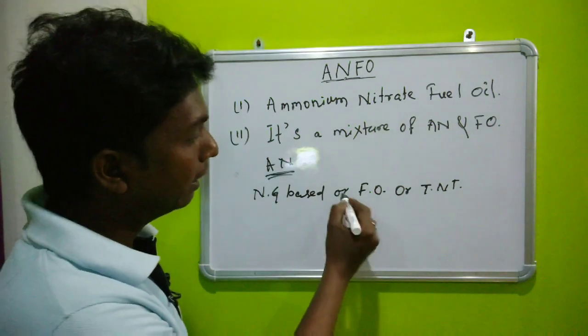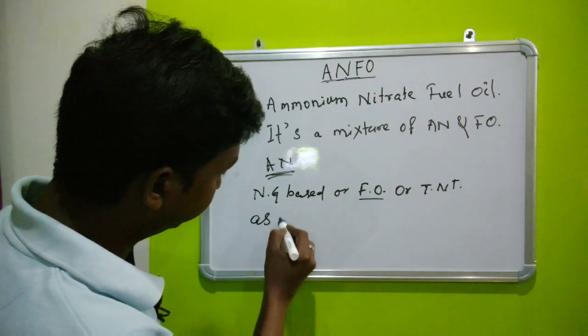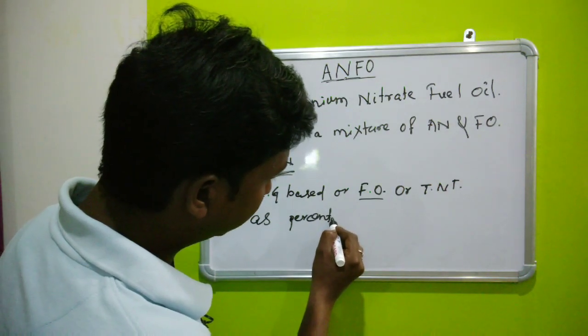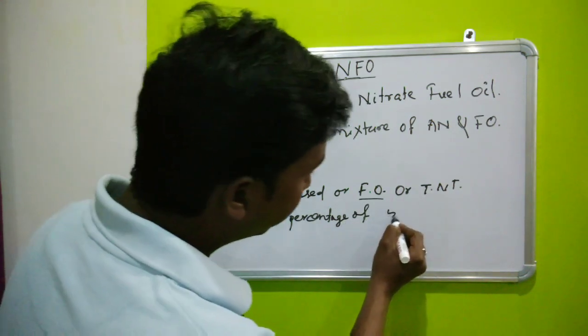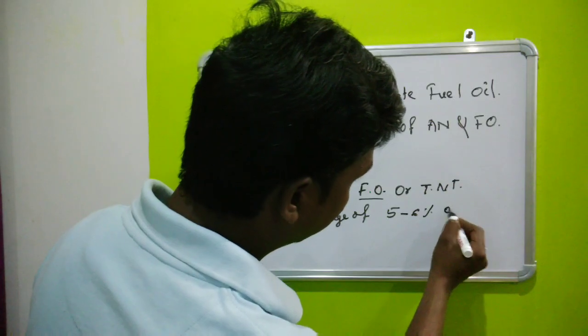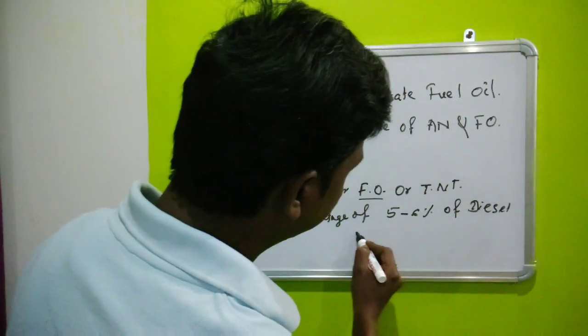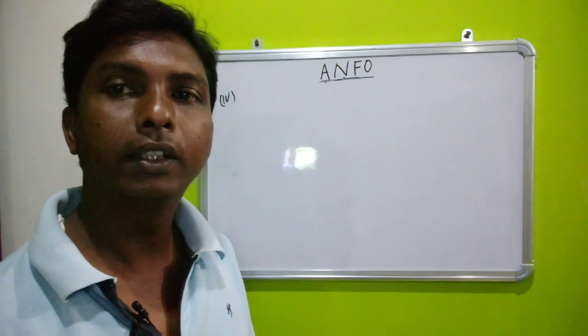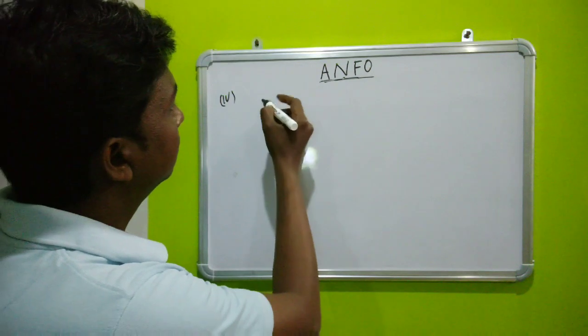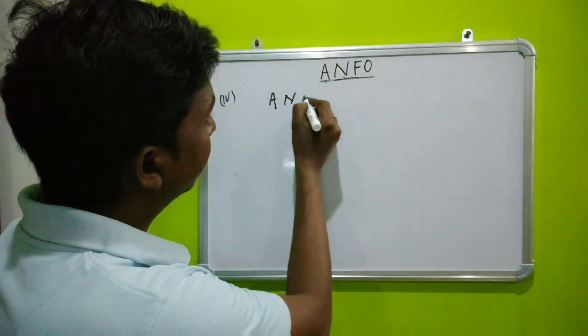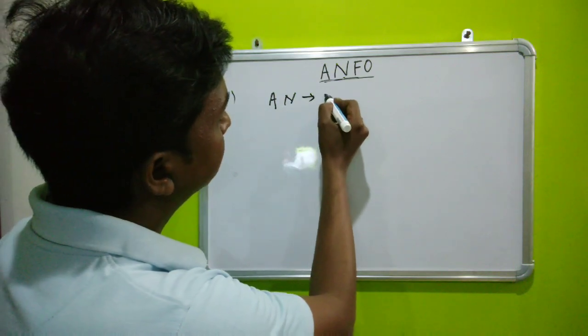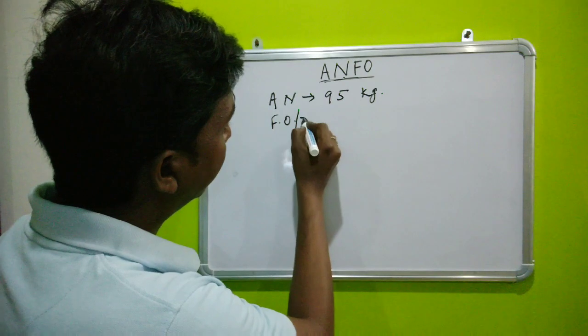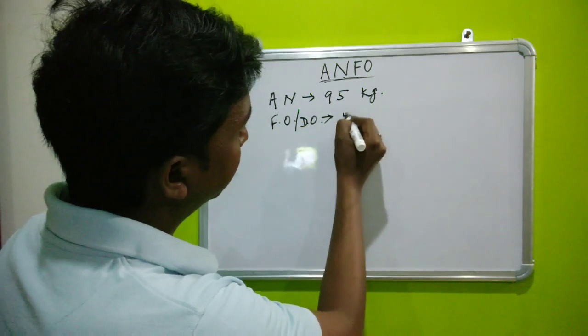The mixture is taken as a percentage by weight. The mixture contents are: ammonium nitrate 95 kg and fuel oil or diesel oil 5 kg.